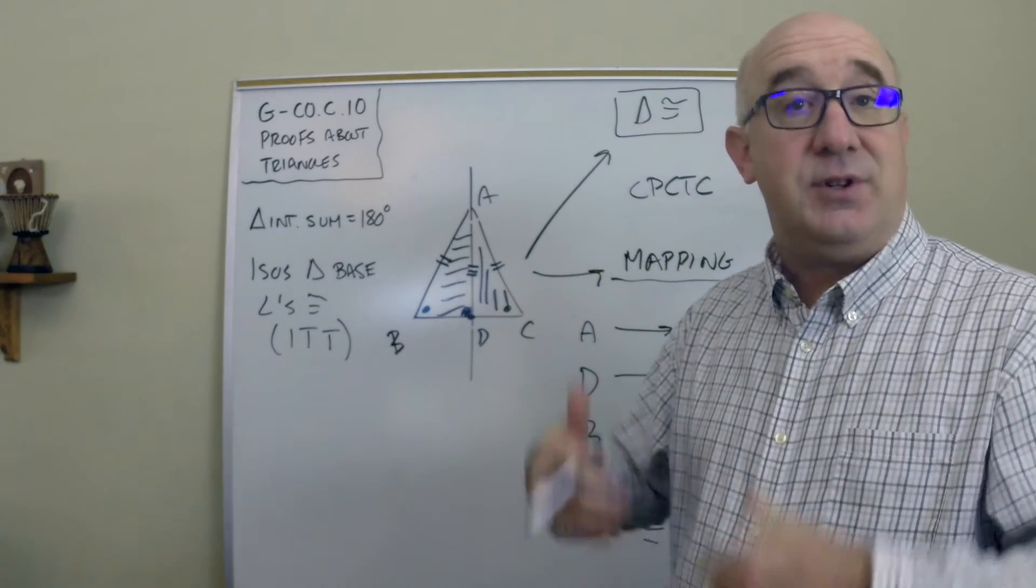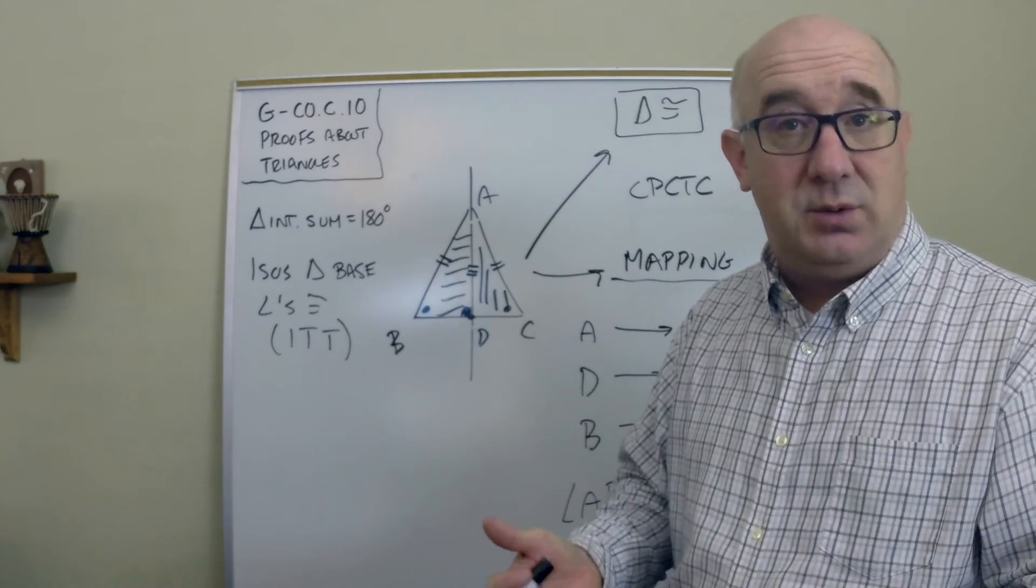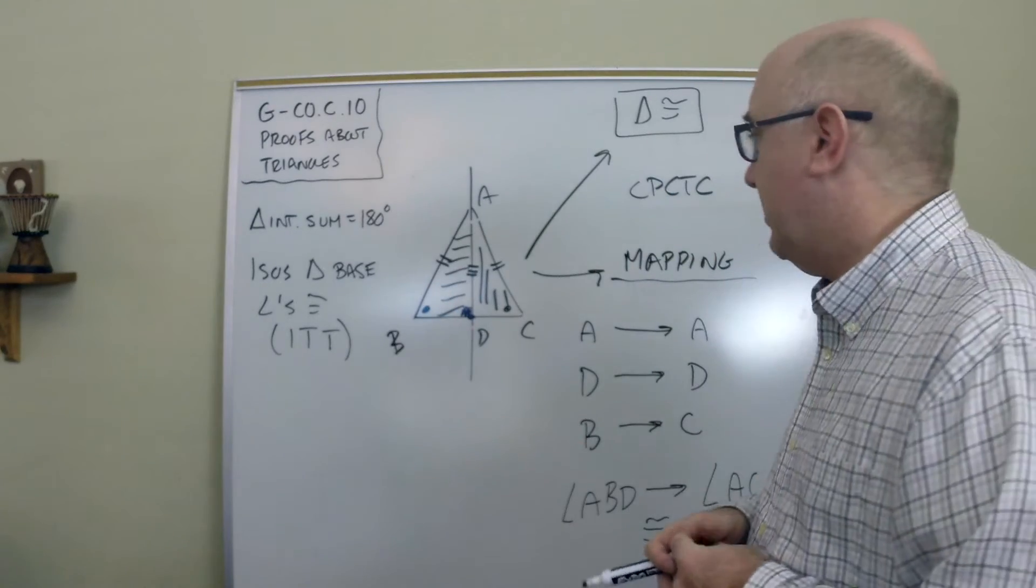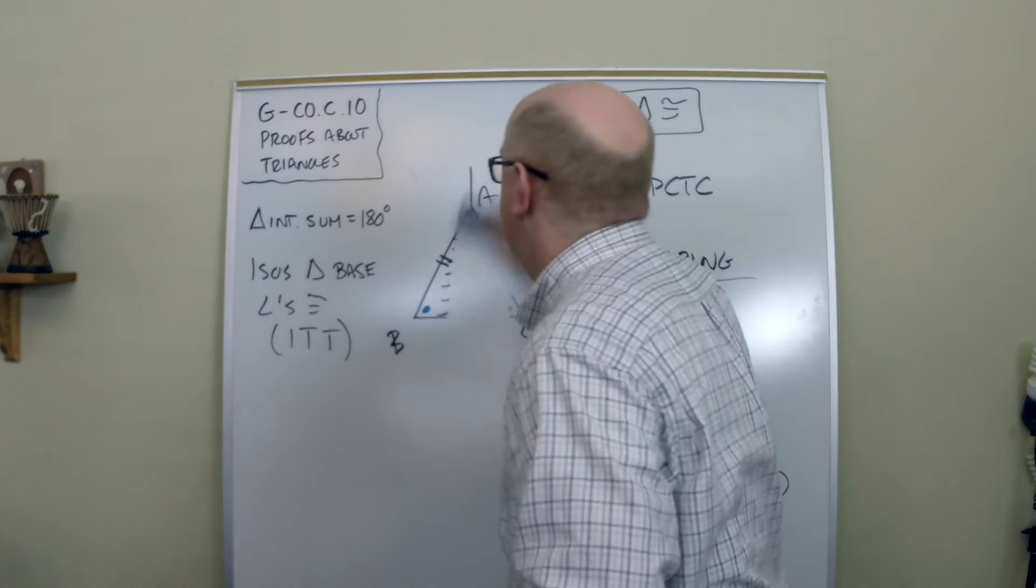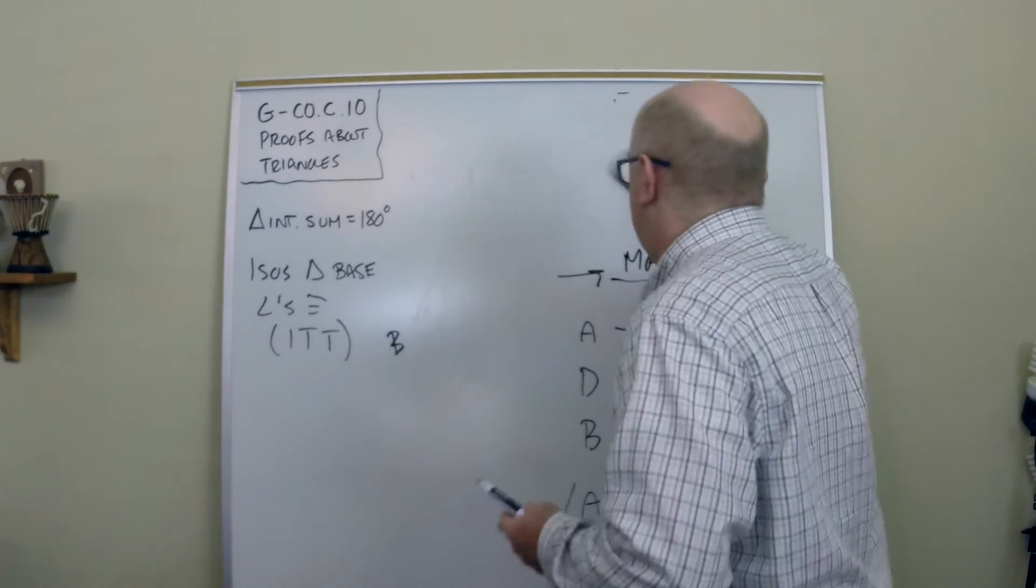And it works in converse. If you have base angles that are equal, you have an isosceles triangle, and so on. The other item that we need to use here, or understand, is called the exterior angle theorem.